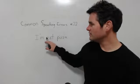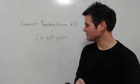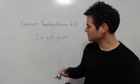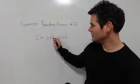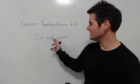So if you're using I'm, you need to put ING at the end of your verb. So that's what we need to do here. So we need to say I'm eating pizza. I'm eating pizza.